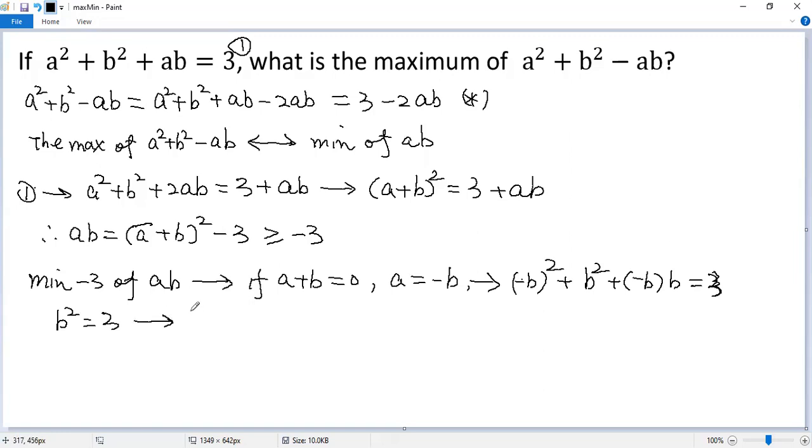Taking square root, so we get b equals plus or minus root 3. By the condition star, the maximum value of a squared plus b squared minus ab would equal 3 minus 2 times the minimum of ab, which is negative 3. So 3 plus 6 equals 9. That is the final answer.